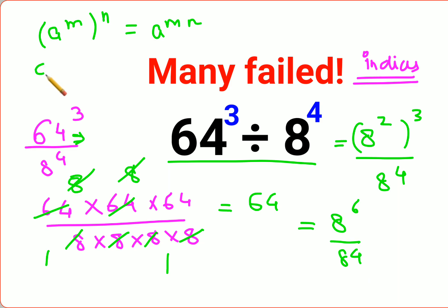Now a raised to m upon a raised to n can be written as a raised to m minus n. So this can be written as 8 raised to 6 minus 4. The answer is 8 raised to 2, which is 64.